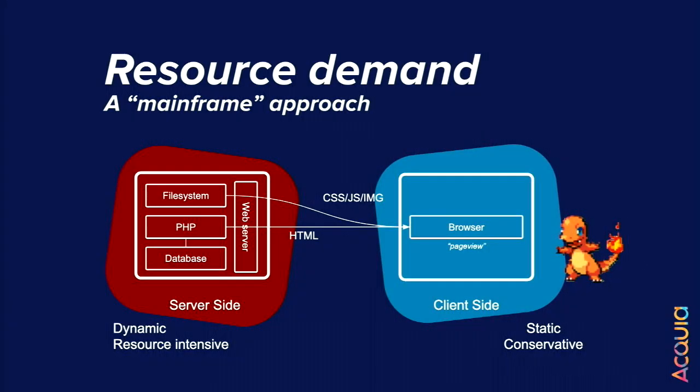When we split this up in terms of responsibilities, the server side is the renderer — the dynamic work is done server-side, and the browser is largely just static, trying to do as little work as possible. The reason for that is because back in 2006 and in the 90s, resources were bad and the internet was slow. All the power sat inside server-side processing, so that's where we wanted to do all the work. It's that mainframe approach: send the request to the mainframe, get it to do the job, and send you back the result.